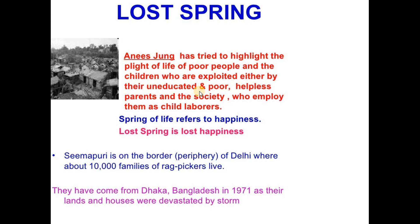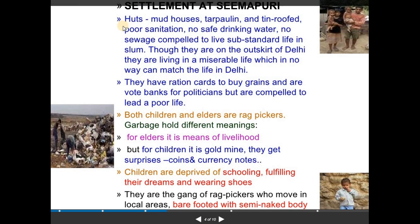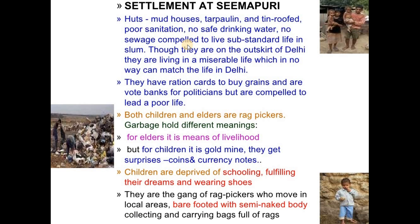They came from Bangladesh and settled in Delhi. They got houses which were huts made of mud, tarpaulin, and tin roofing. Sanitation was not good at all, and there was no provision for safe drinking water or sewage. These poor rag pickers were compelled to live a substandard life devoid of any basic or civic amenities. Though they lived on the outskirts of Delhi, in terms of living standard they were miles apart from it.